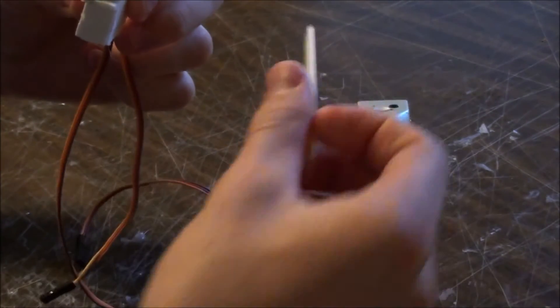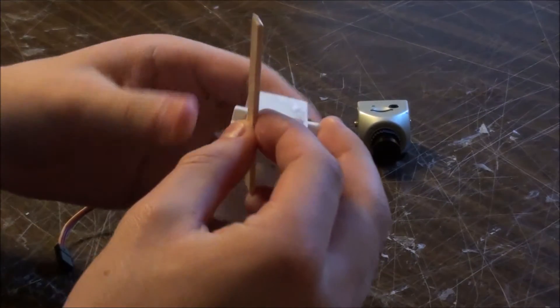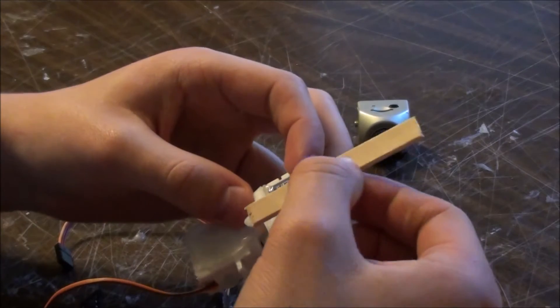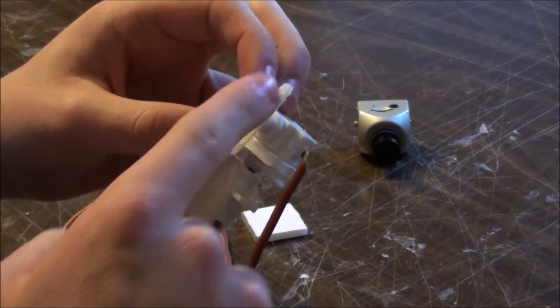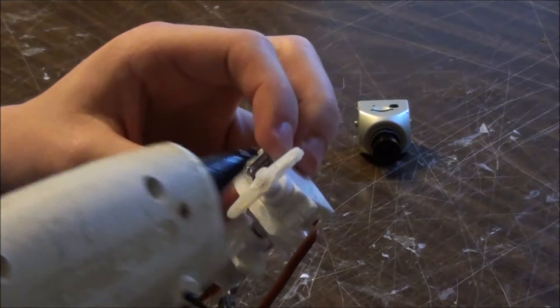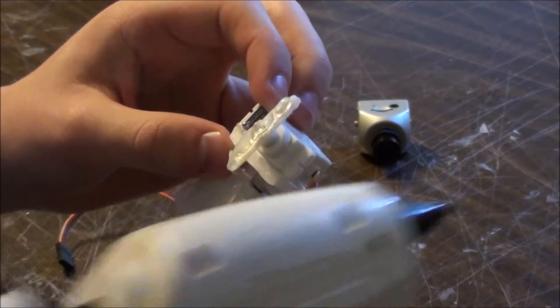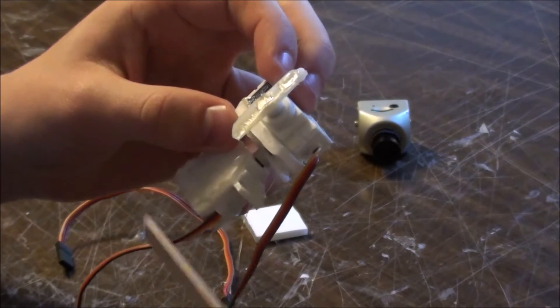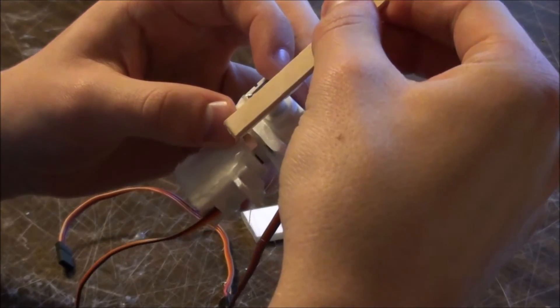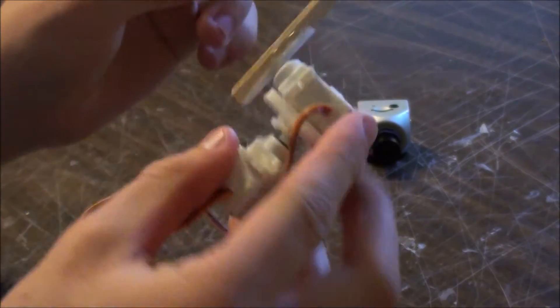Now we're going to take our popsicle stick that is 2 and 3 quarter inches long, and we're going to glue this right on this control horn that is perpendicular with the servo. We'll go ahead and put some more glue on, stick this on top, and that should dry pretty quickly.